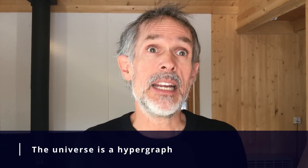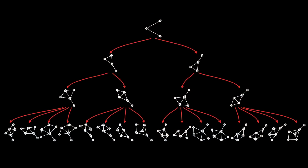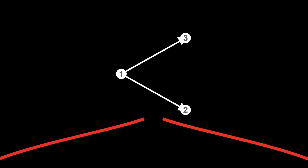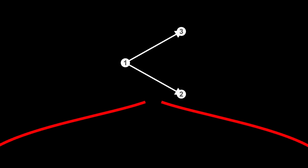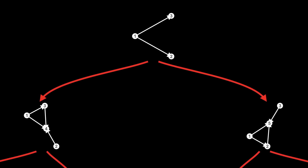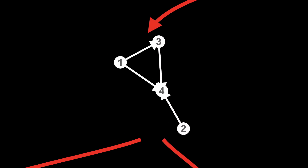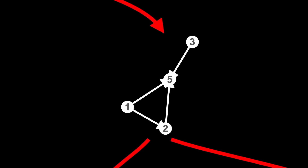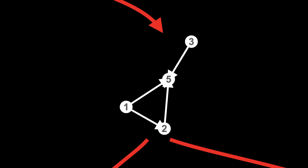The universe, remember, is a hypergraph. From this initial state of the universe — this initial hypergraph — we can apply our rule in two ways. Applying it one way deletes the edge from node 1 to node 2, and creates a new node 4. Applying it the other way deletes the edge between nodes 1 and 3, and creates a new node 5.